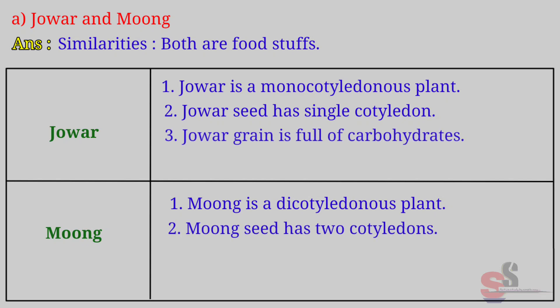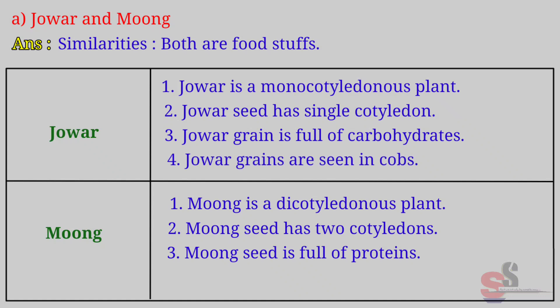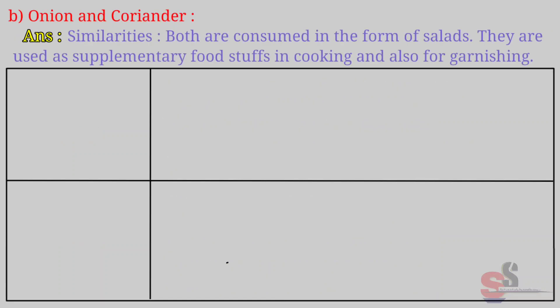Jawar grain is full of carbohydrates; Moong seed is full of proteins. Jawar grains are seen in cobs; Moong are present in legumes. B. Onion and Coriander. Similarities: Both are consumed in the form of salads.